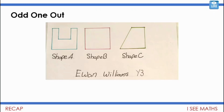Actually shape B could be the odd one out because all its sides are the same length. Or actually it could be shape C because it hasn't got any lines of symmetry, whereas shape A and shape B do have at least one line of symmetry. Thank you again for all of the wonderful examples.